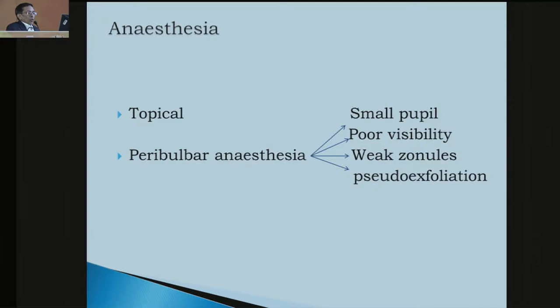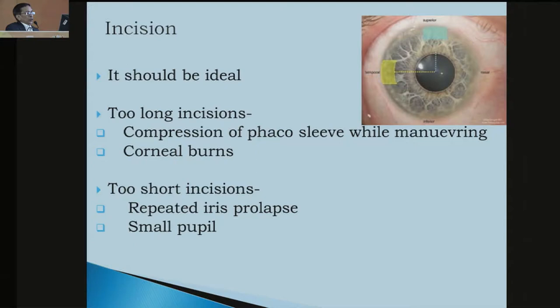You can have topical or peribulbar anesthesia. If there is a small pupil, the patient is not cooperative, or there are weak zonules, try to do it in peribulbar anesthesia. For the incision, it should be ideal - a corneal or limbal incision. You should not use too long an incision because compression of the phaco sleeve while maneuvering leads to corneal burn. If it is too short, repeated iris prolapse may lead to a small pupil.